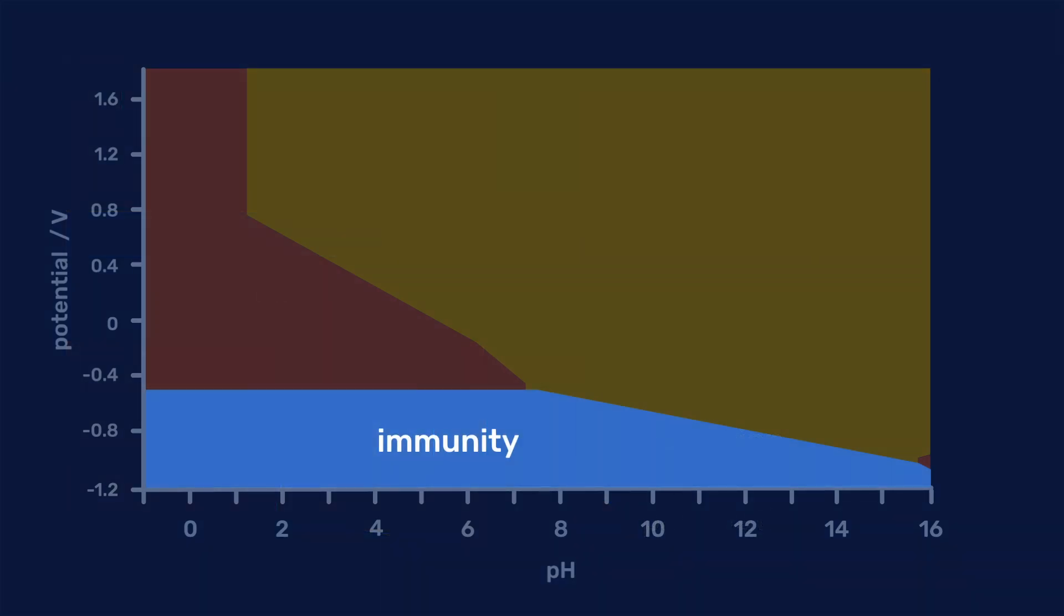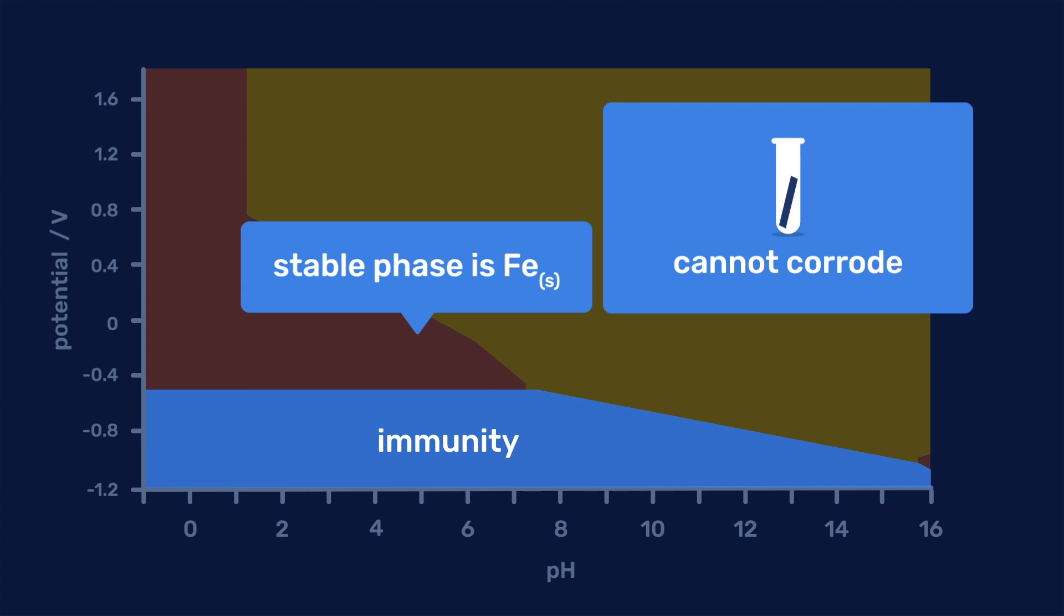In the immunity region, the stable phase is the metal, in our case, metallic iron. Under these conditions, it cannot corrode.